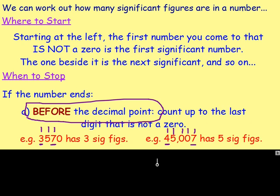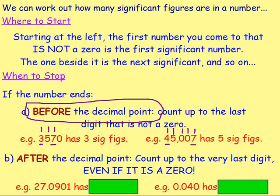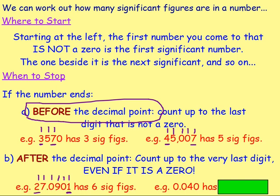What do we do if it ends after the decimal point? Even if your number ends after the decimal point, what you do is you count up to the very last digit, even if it is a 0. For example, here with 27.0901 — the first significant figure, the first digit that is not a 0, is the 2. The number ends after the decimal point, so we count up to the very last digit. The very last number here is a 1, so that is our last significant figure. This is our first, second, third, fourth, fifth, and sixth significant figure. So you would say that has six significant figures.